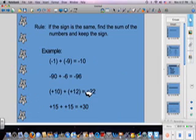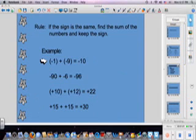When adding integers, if the sign is the same, find the sum of the numbers and keep the sign. For example, negative 1 plus negative 9 equals negative 10. Since they're both negatives, you keep that sign. Another example: negative 90 plus negative 6 equals negative 96. With positive numbers, 10 plus 12 is 22, and 15 plus 15 is 30.